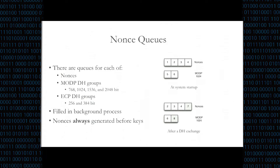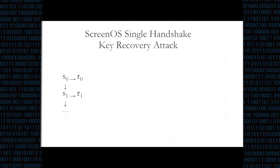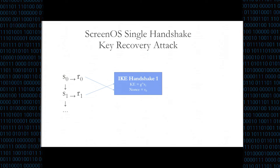Because of this behavior in the nonce queues, we can do a single handshake key recovery attack. We have a single handshake where the nonce is generated ahead of the key. A dual EC attacker takes the nonce sent in the clear, uses the backdoor value D to recover the generator state, and then immediately knows the key — the private exponent — and therefore the key used in that connection. So a passive attacker can see one VPN connection and immediately begin decrypting traffic.